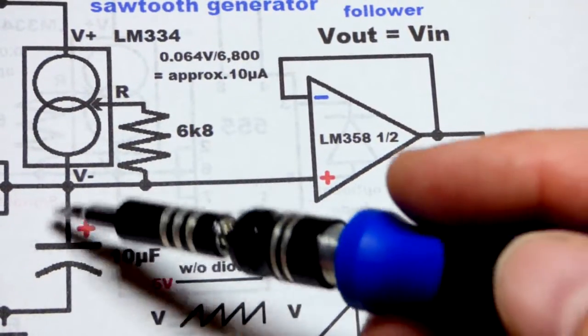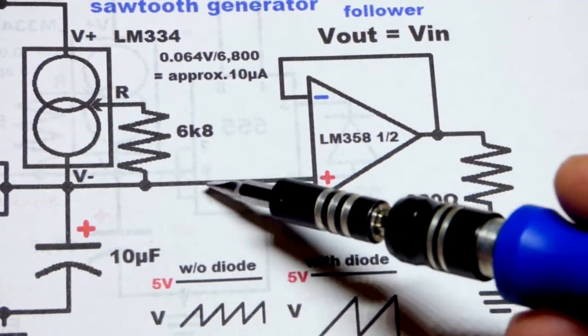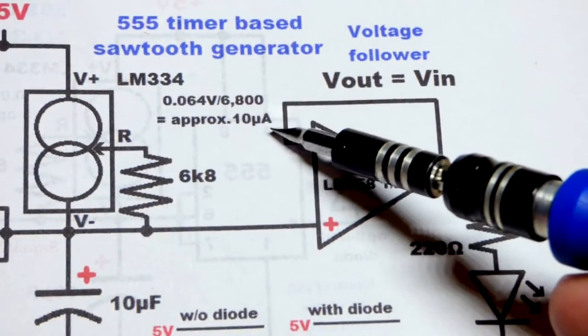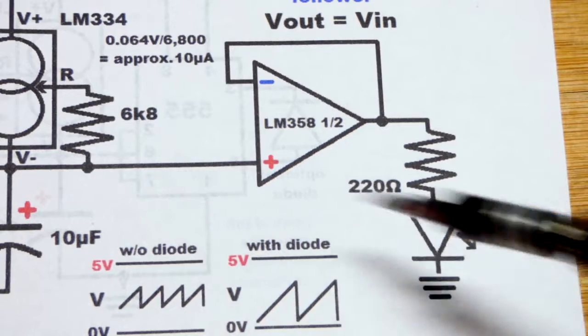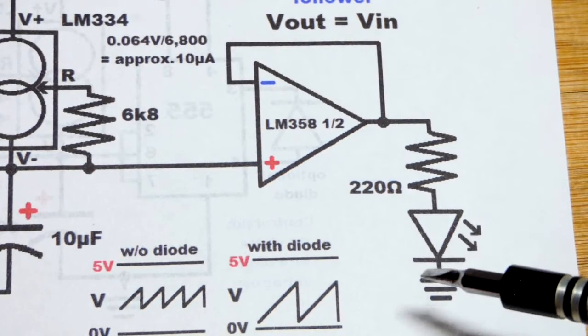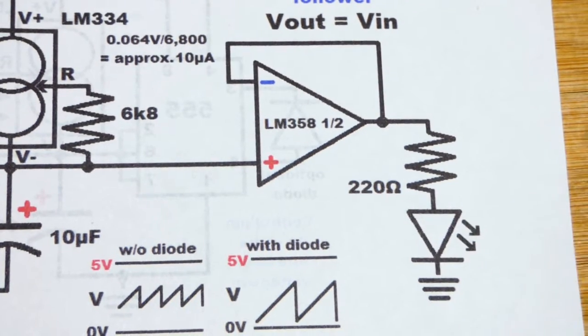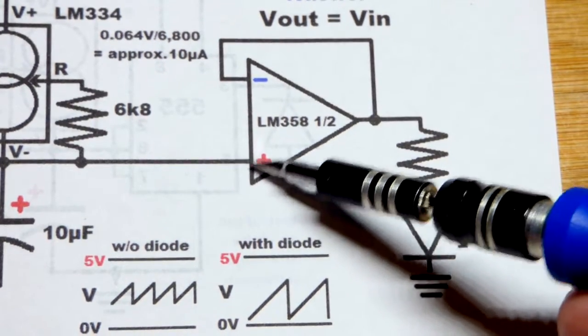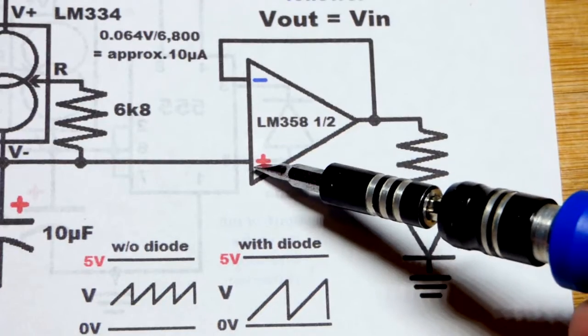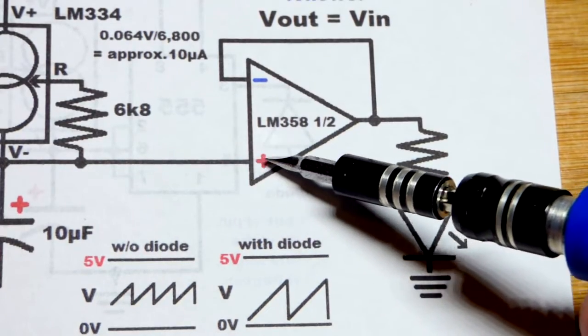We cannot take that capacitor voltage and power anything. We're only dealing with 10 microamps right there. So an LED is just going to hold the voltage down, probably not even show any light and nothing's going to happen. We're just going to lock in place. So we're giving that signal to an amplifier.